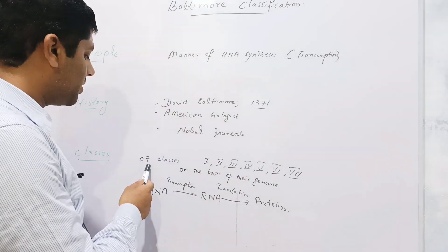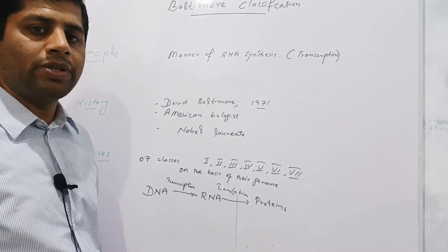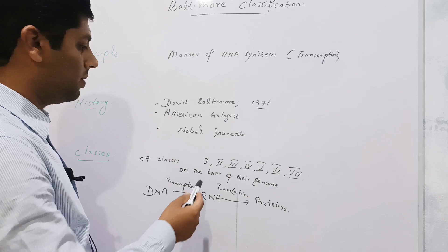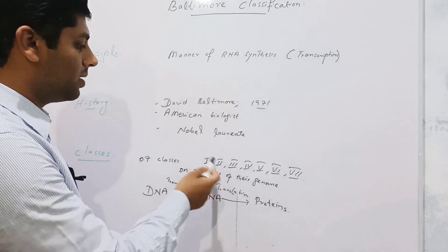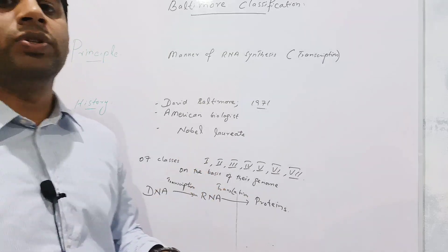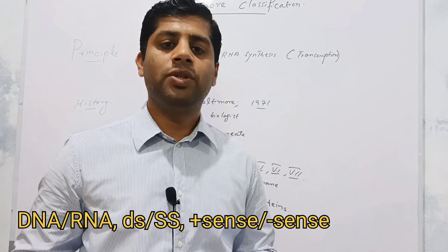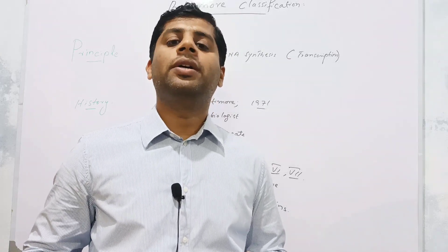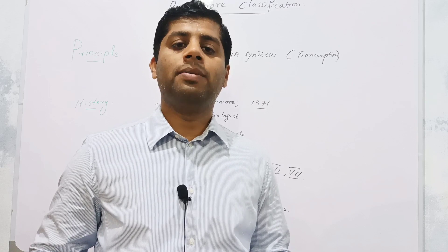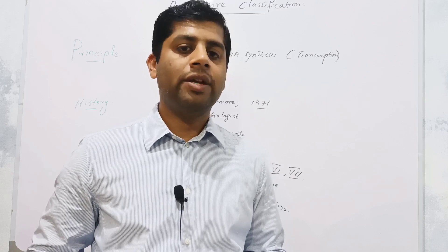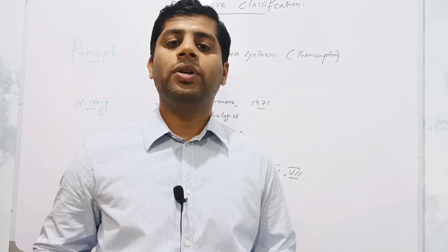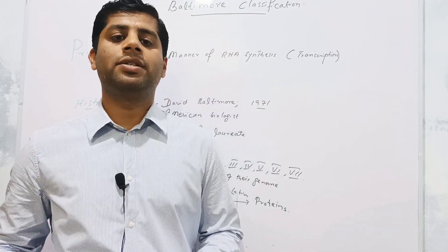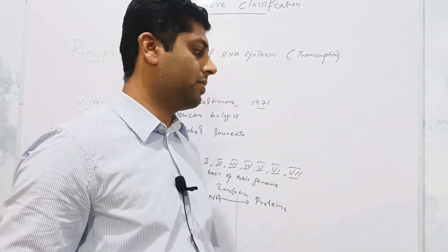There are seven classes in the Baltimore Classification System, represented by Roman numerals. These classes are designed on the basis of the genome of the viruses — whether the genome is made up of DNA or RNA, whether it is single-stranded or double-stranded, and if it is single-stranded, whether it is positive-sense or negative-sense single-stranded. All of this will be discussed in this lecture.